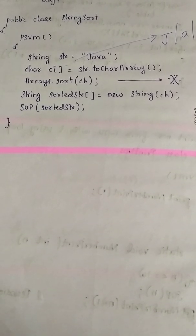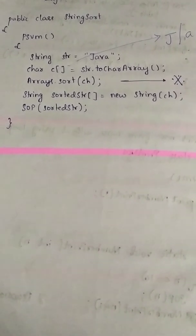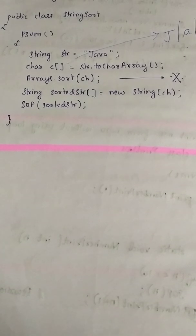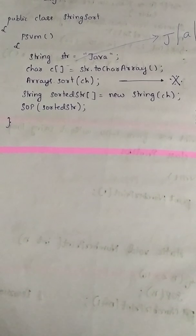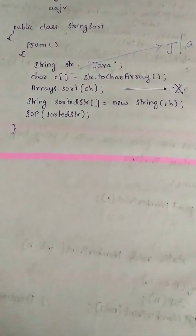After that, you're converting back those characters to string form and storing it in the sortedStr variable. You are printing that sortedStr, so the output would be a, a, j, v as expected. Thanks for watching this video.